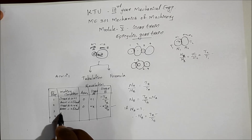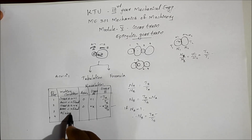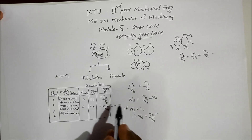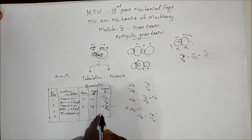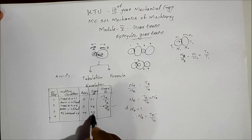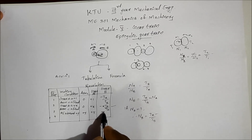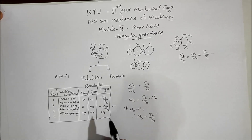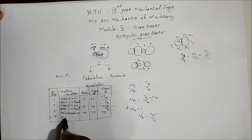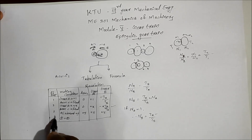In Step 3, add plus Y revolutions to all elements. Each column gets plus Y added. In Step 4, combine Steps 2 and 3 by adding Y to each result. This gives the final row of the table.